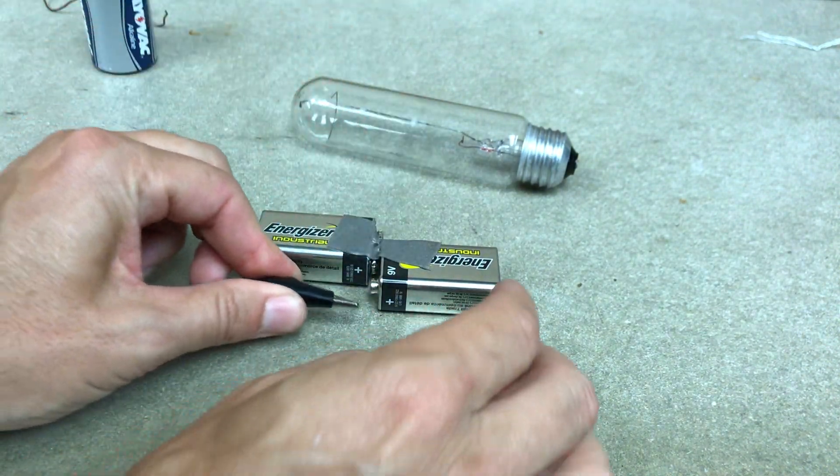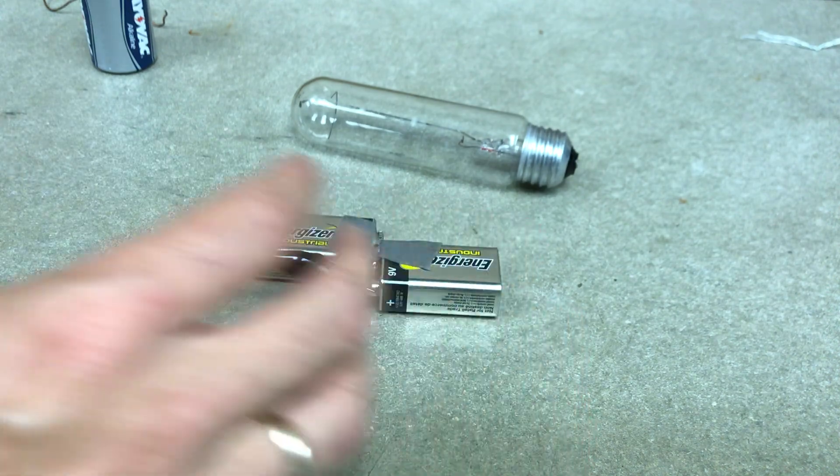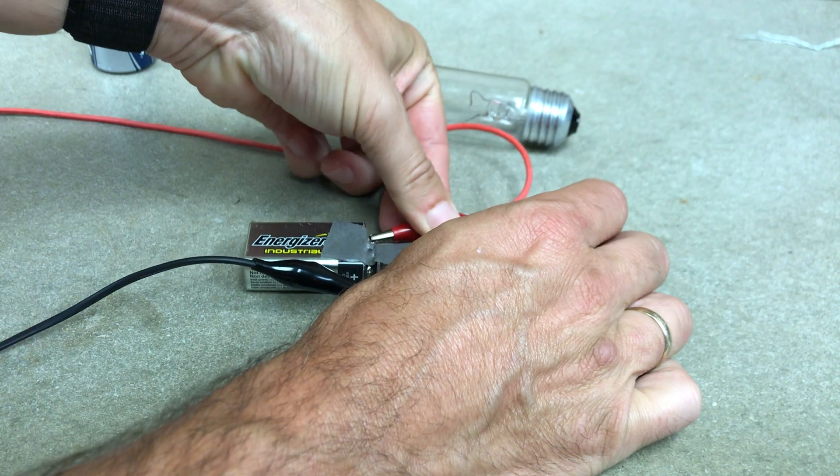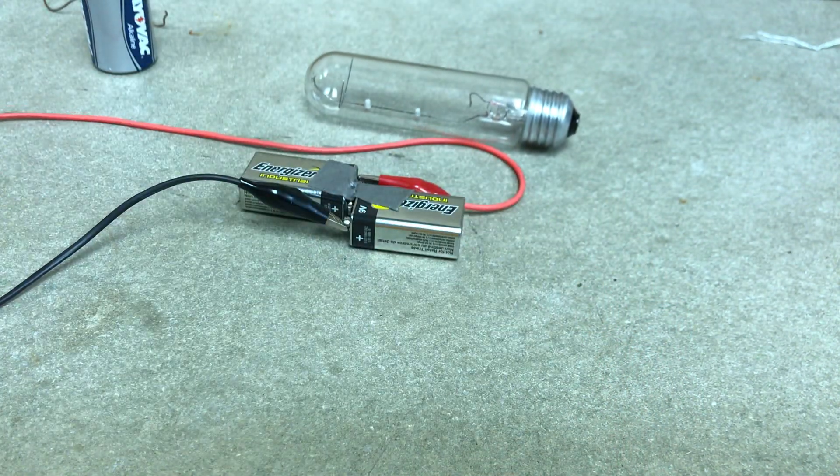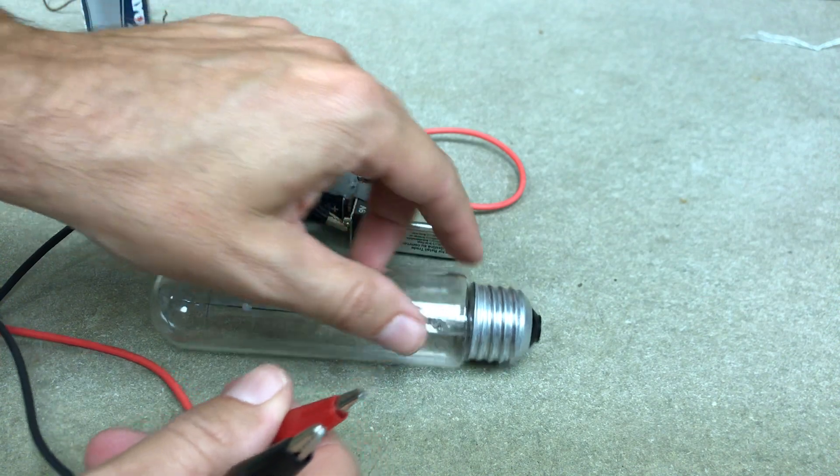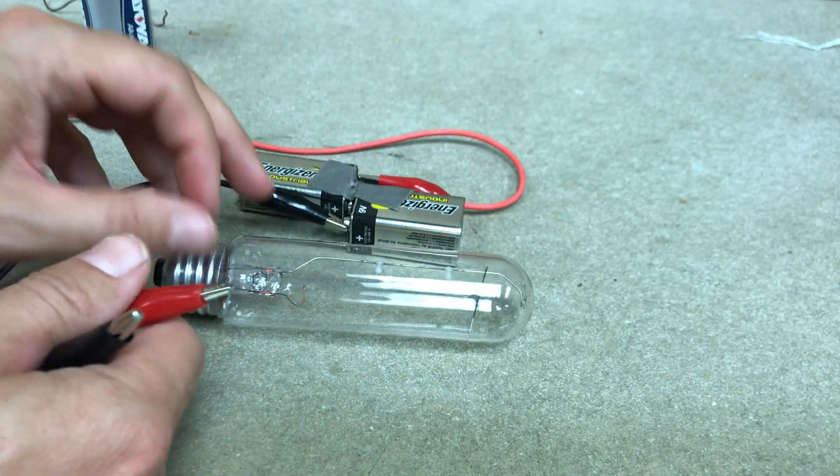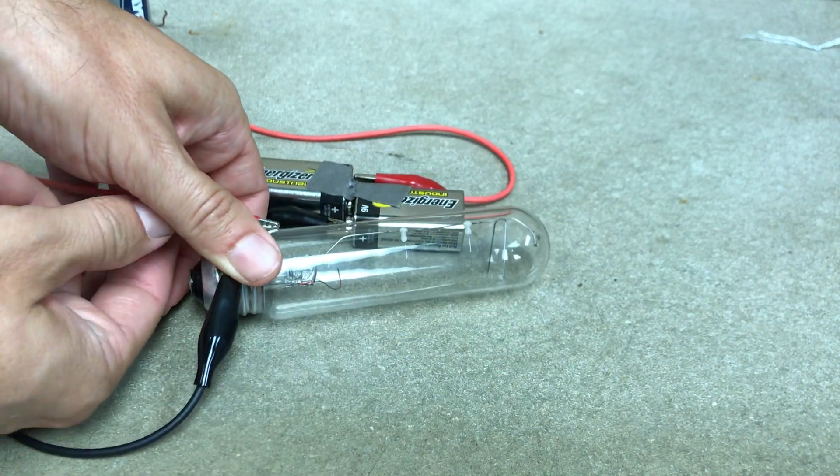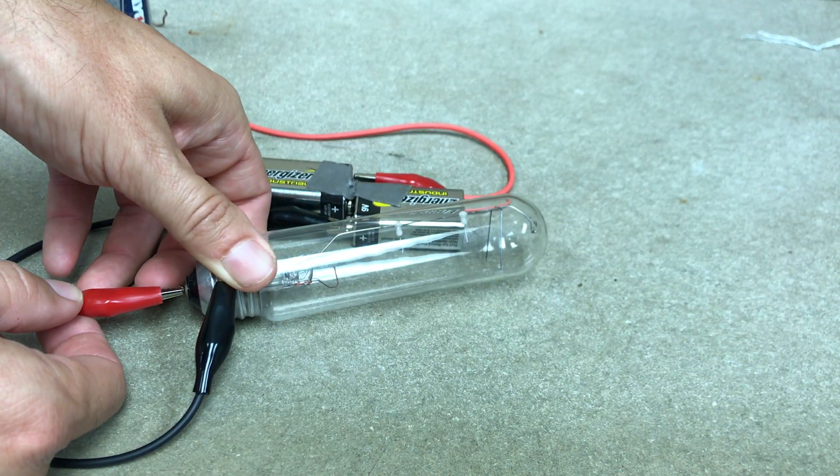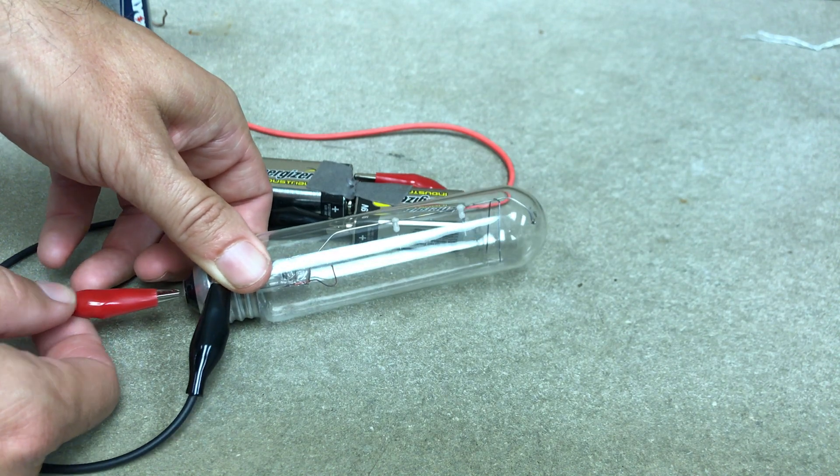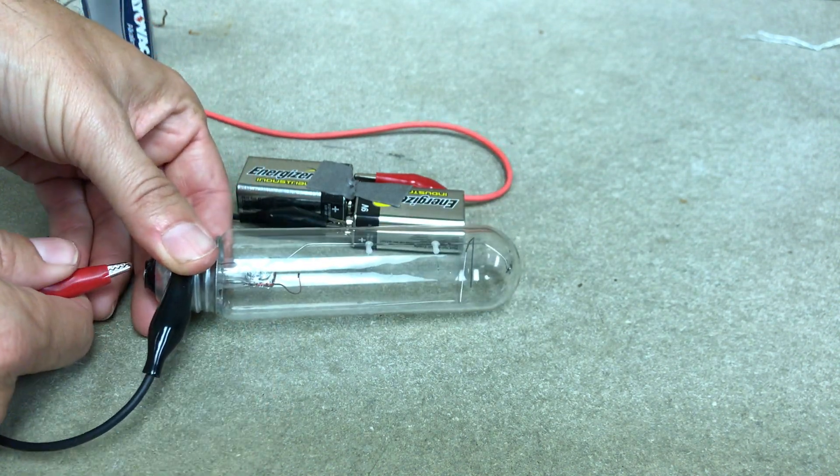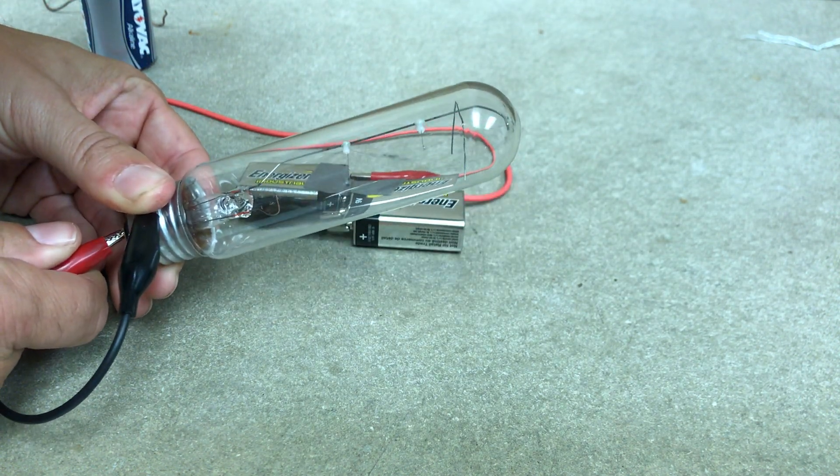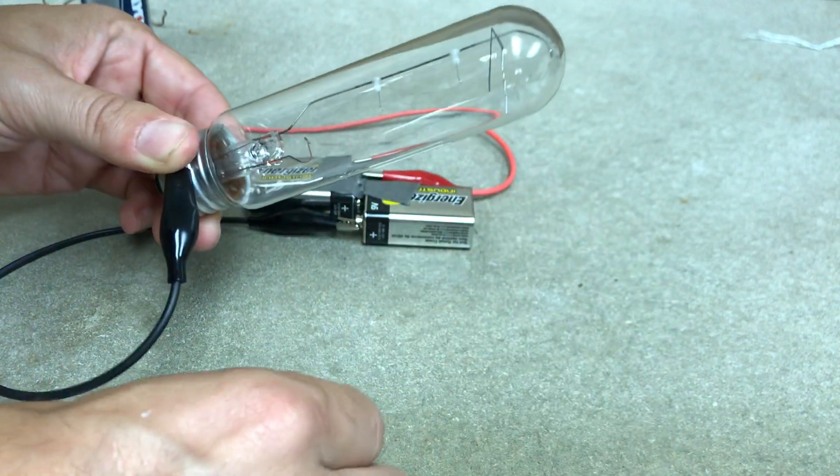So I'm going to take these clip wires, which I'll show you in just a second. And I'm going to take this. Now I just want to hold one to each of the connections down here. I'm going to hold one to the side. And then I'm going to touch the other one right here. And nothing happened. Isn't that awesome? I got it to work.